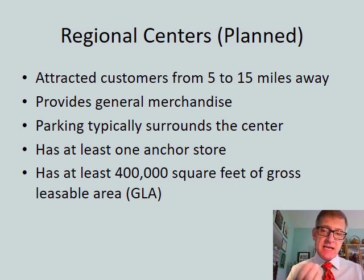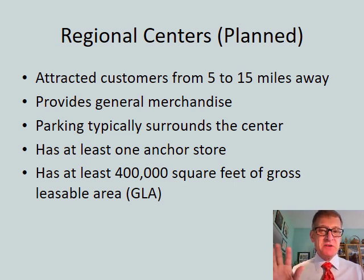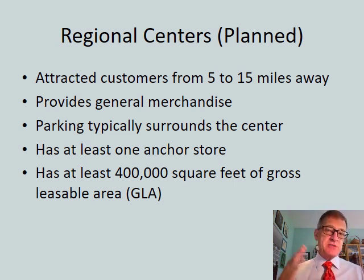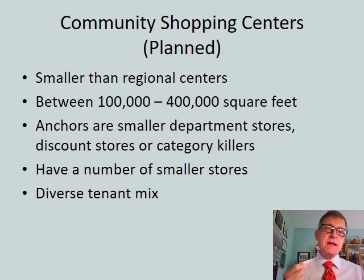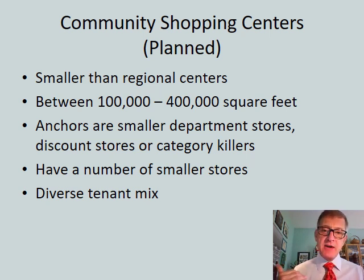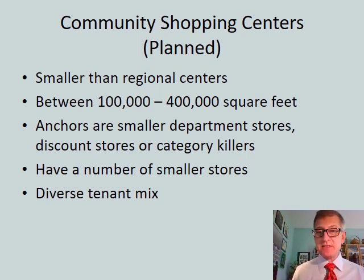Regional centers are a type of planned site — typically 5 to 15 miles away, taking 5 to 30 minutes to get there. They usually carry general merchandise, have a lot of parking, and at least one anchor store. The book discusses gross leasable area, or GLA, for these. A community shopping center is also planned but smaller — maybe a quarter the size. The anchors tend to be smaller department stores or discount stores with a number of smaller stores and a lot of diversity in the mix. The mall in Newark, Ohio, out in Licking County, is this kind of mall — not big enough to be a regional center.